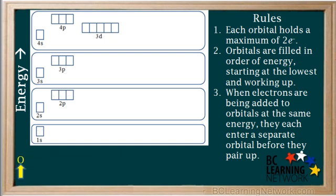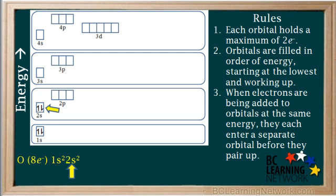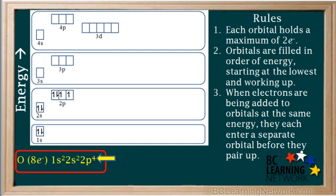Now we'll move on to the next element, oxygen. A neutral atom of oxygen has eight electrons. The first two go into the 1s orbital, the next two go into the 2s, and the fifth electron enters the 2px orbital. The sixth electron goes into the 2py, and the seventh into the 2pz. The eighth electron pairs up with the electron in the 2px. Remember, each single orbital holds a maximum of two electrons. So the electron configuration of oxygen is 1s², 2s², 2p⁴.